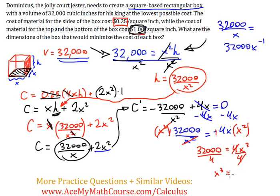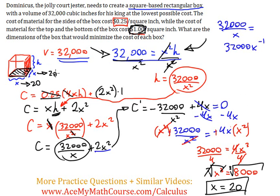So x³ = 8,000 (32,000 divided by 4). Taking the cubic root of both sides, we get x = 20 inches.